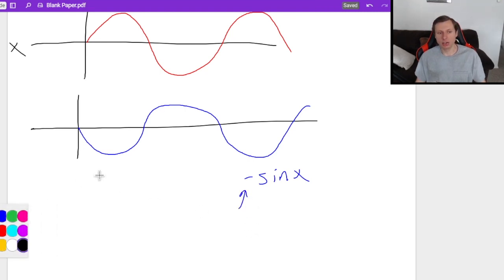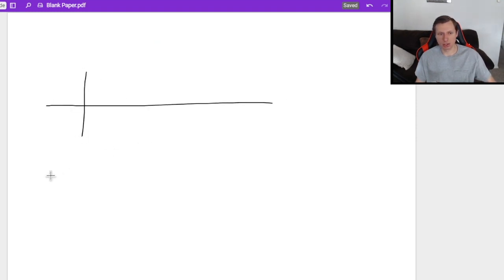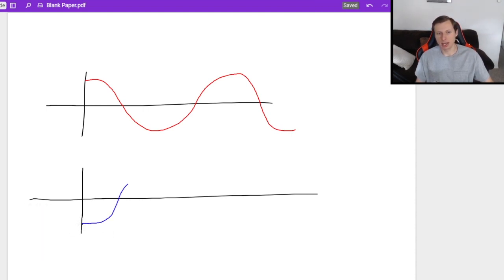Similarly, if you wanted to do this to the cosine function, it would look like this. So here's the normal cosine function. It starts at one and then goes like that. And if you want to reflect this along the x-axis, well now you start from the bottom position and then everything else follows like that.